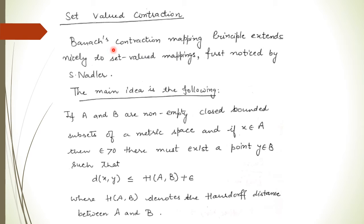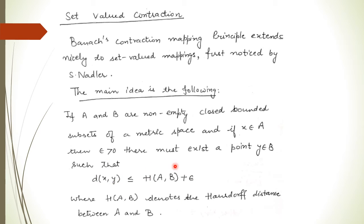The Banach contraction mapping principle extends nicely to set-valued mappings, and this was first noticed by Nadler. The main idea is: if we take two non-empty closed bounded subsets A and B of a metric space and take any point x from A, then for ε > 0 there must exist a point y from B such that d(x, y) ≤ H(A, B) + ε, where H(A, B) is the Hausdorff distance between the sets A and B.